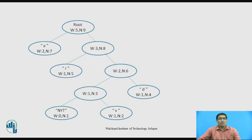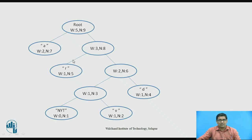Now we consider an example. Here W means weight and N means node number. We will see what weight and node mean and how the values 5 and 9 arise later with the help of an example.